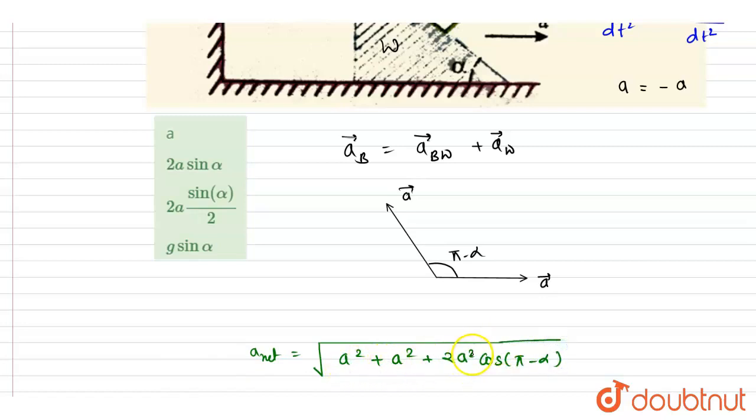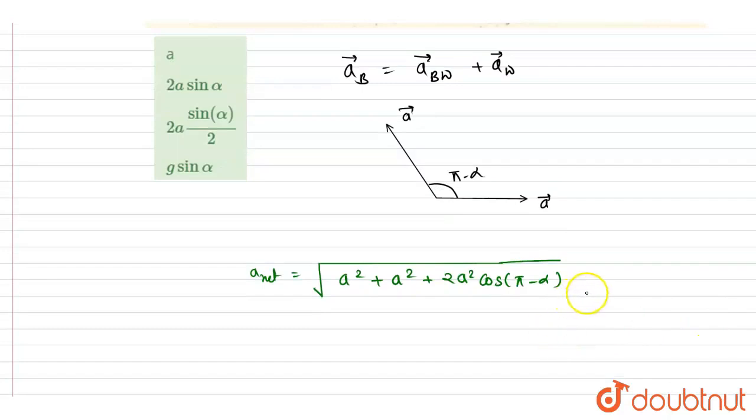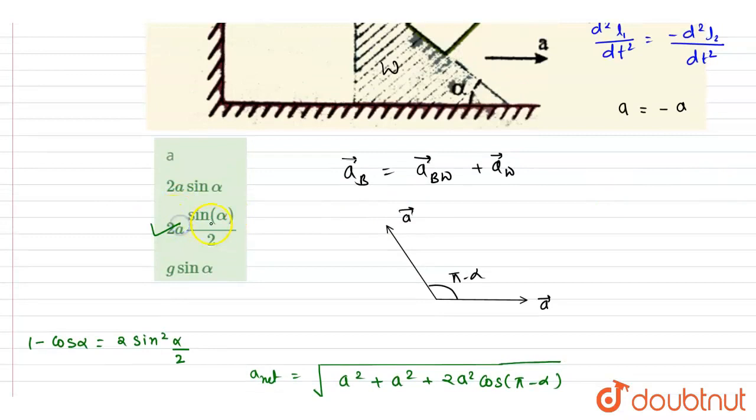If you take 2a^2 common, it will be 1 minus cos alpha. We know that 1 minus cos alpha is 2 sin^2(alpha/2), right? So you can just put it and we will write down: it is 2a sin(alpha/2). Now you can check for the option 2a sin(alpha/2), so option C is the correct answer.